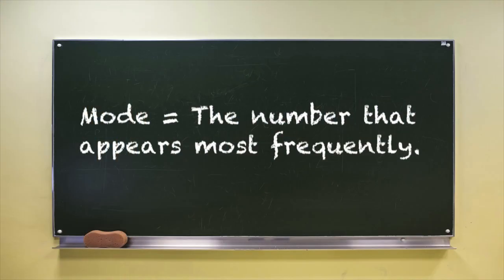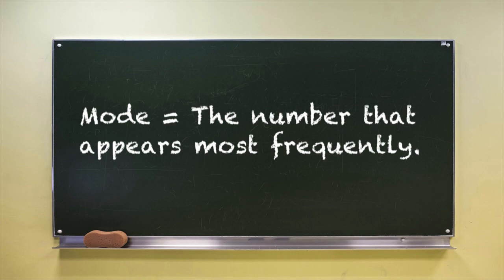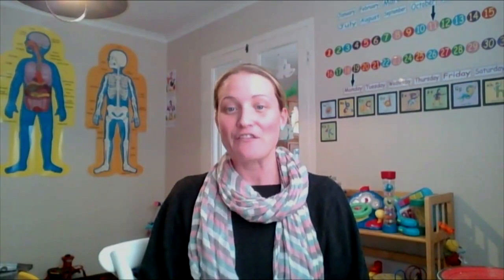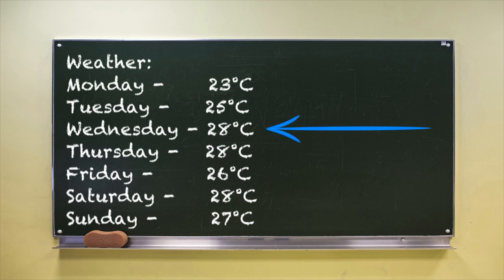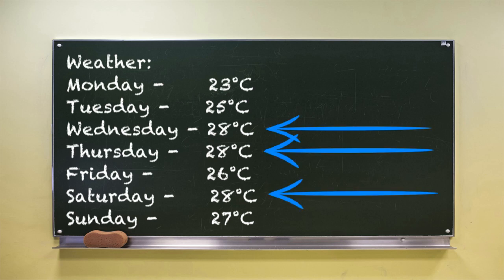So now we know the difference between mean and median, let's look at mode. Mode is the mathematical word we use to explain the value that appears most frequently in a data set. For example, you may go outside every day in the summer and measure the temperature outside. You will find that something like 28 degrees might occur the most — it is the most frequently occurring temperature in the summer.